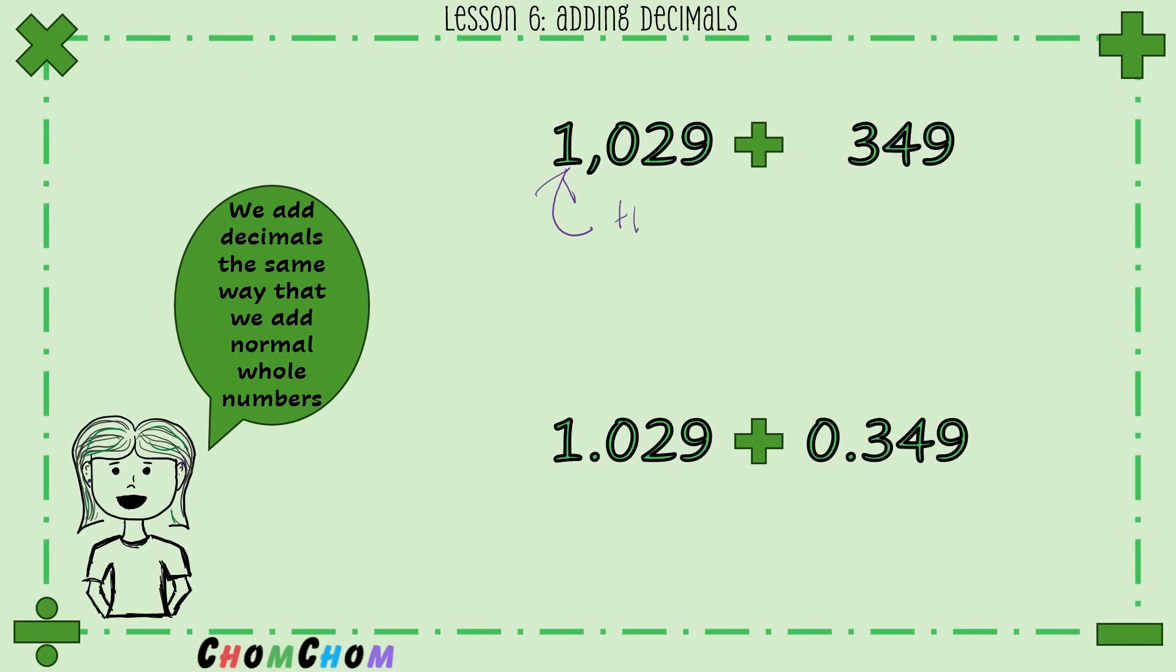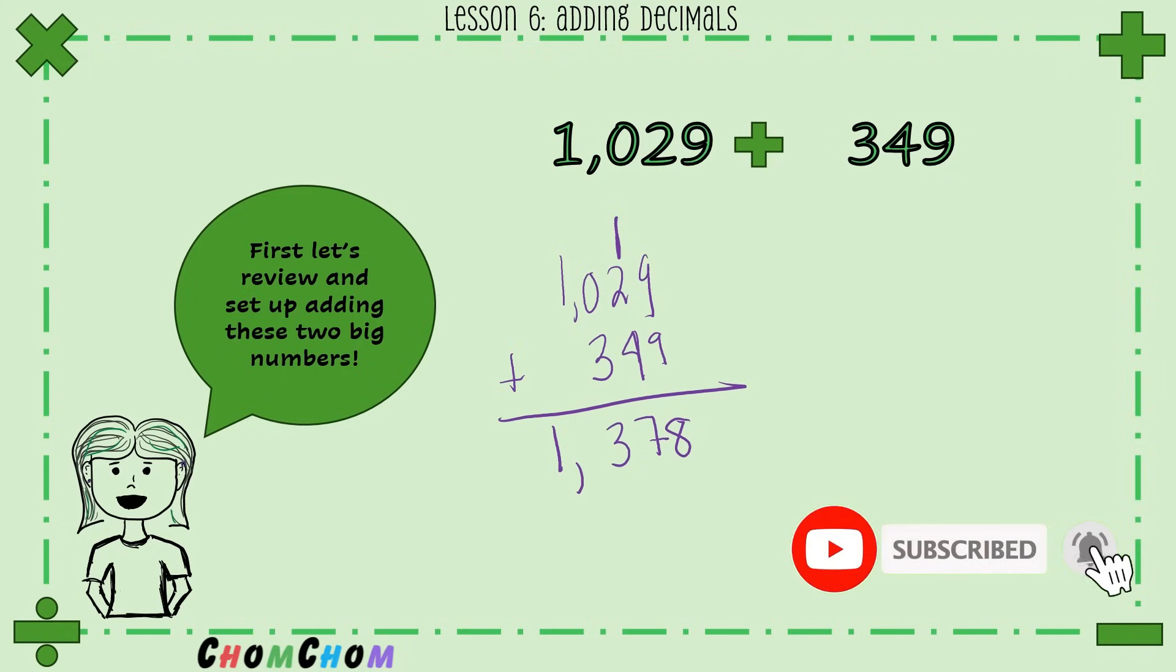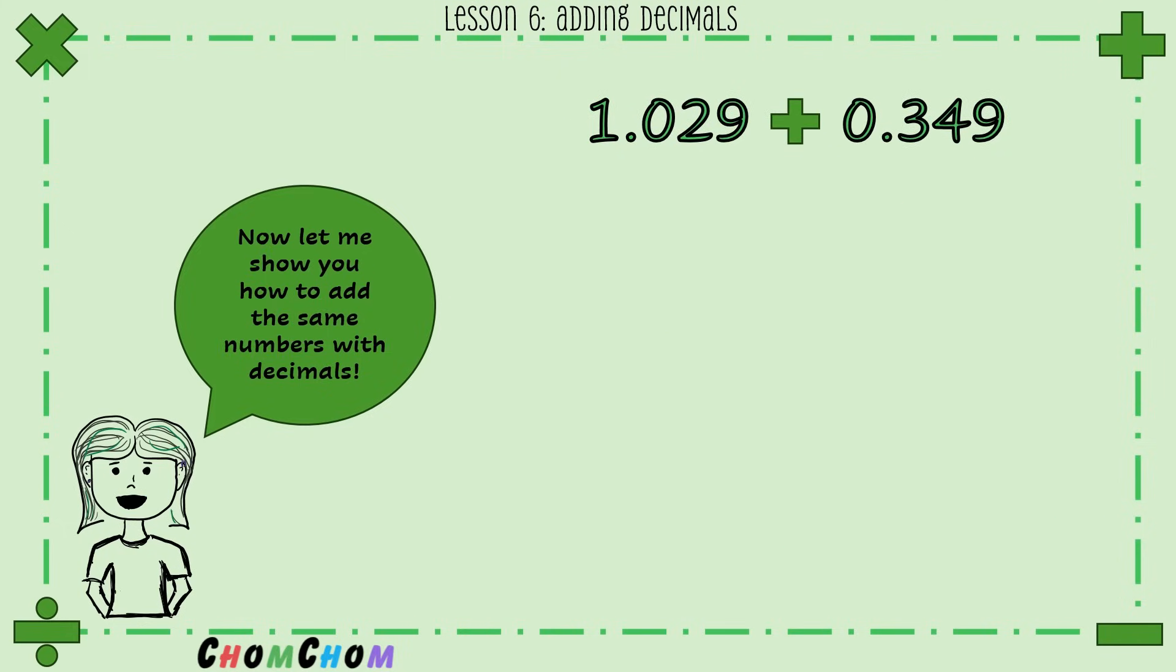We're going to compare this to this. So first let's review by adding up these big numbers. We have 1,029 plus 349. So 9 plus 9 is 18, we carry the one. Then we have 2 plus 4 which is 6, plus one more which is 7. And then we have a 3, then we have a 1. So we have 1,378. That's what we get when we add up these total whole numbers - we get 1,378.